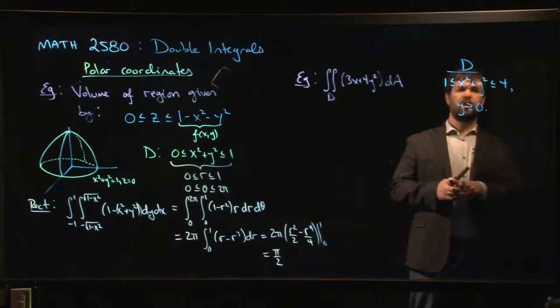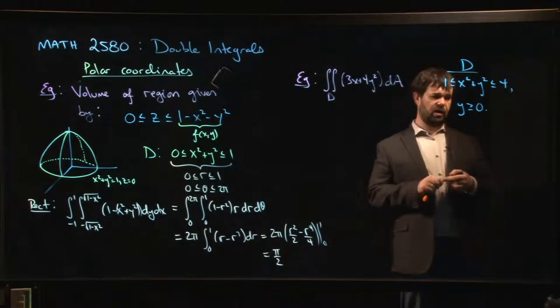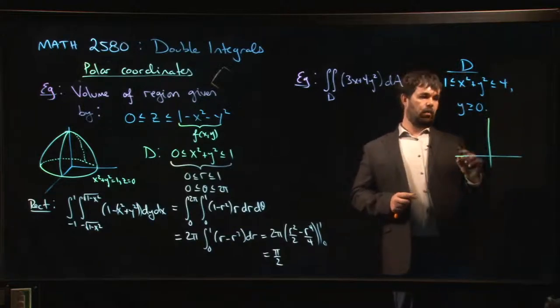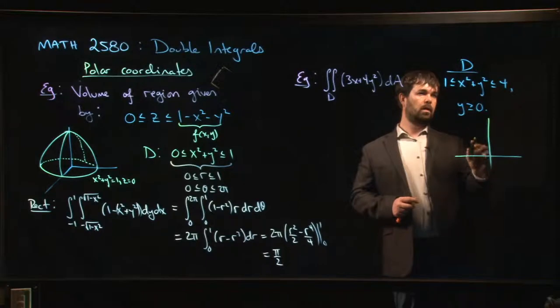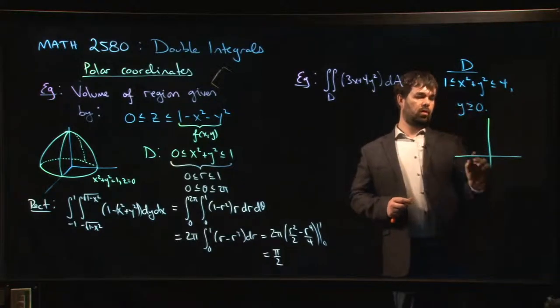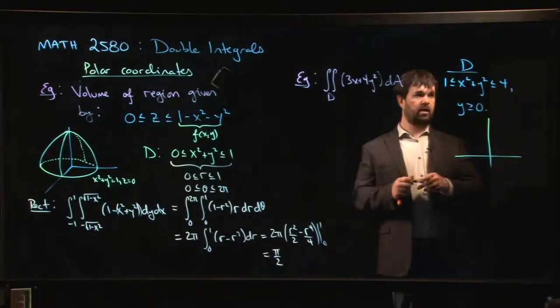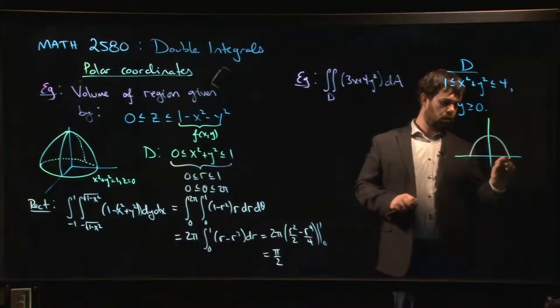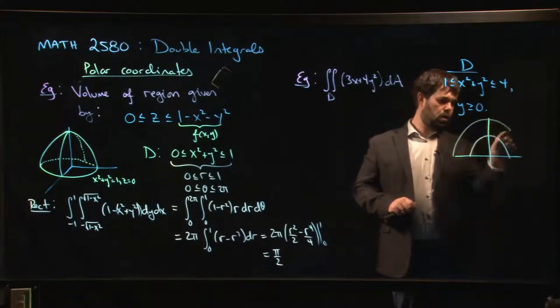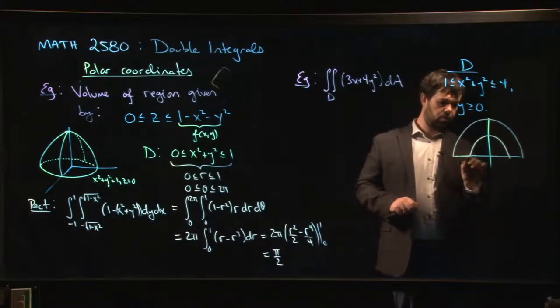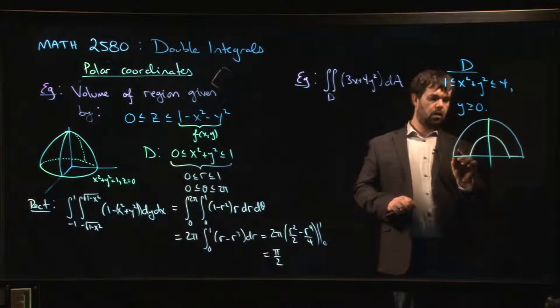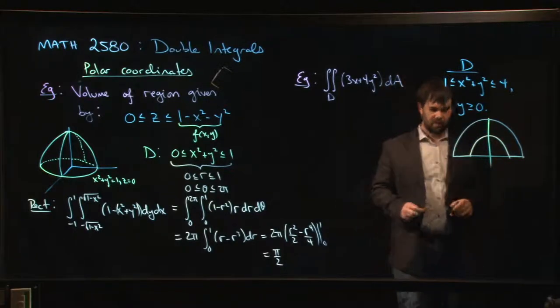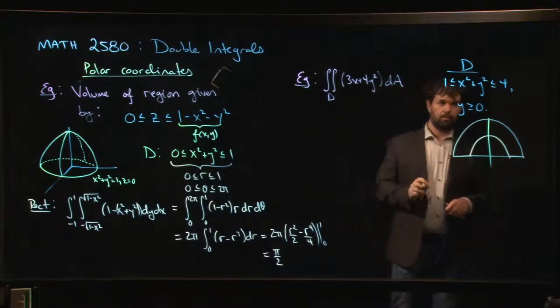Well, here's our region. Again, it really helps to sketch things out. Make sure you know what you're looking at. What is the region? Well, y is bigger than or equal to 0, so we're in the upper half plane. Circles. So we have two circles. x squared plus y squared equals 1, x squared plus y squared equals 4. That's a circle of radius 2. And our region is everything in here. So it's this sort of half annulus, if you like. That's our region.